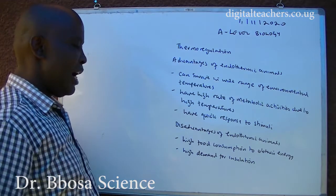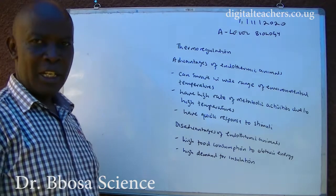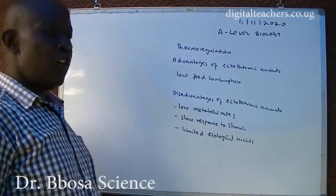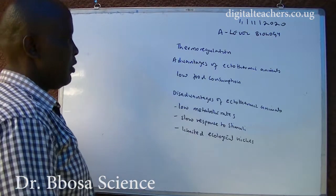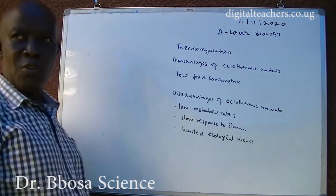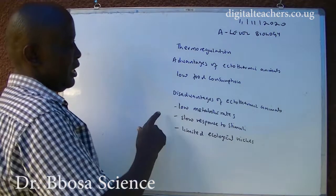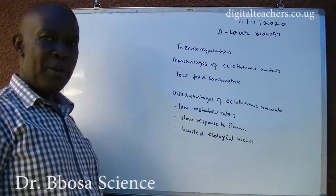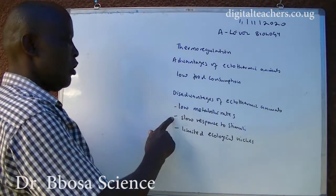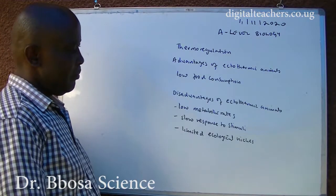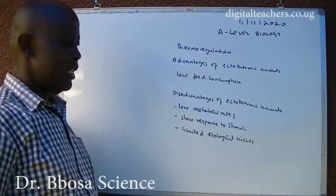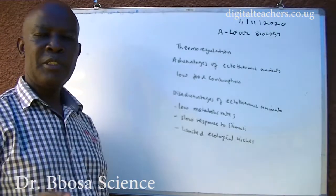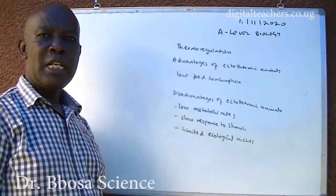They have a high demand for insulation in a cold environment. Advantages of ectothermic animals: they have low food consumption. Disadvantages of ectothermic animals: they have low metabolic rates, low response to stimuli, and limited ecological niches — they cannot survive in extreme environmental temperatures.